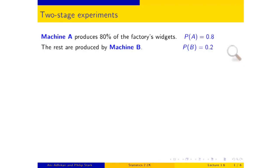That's the first stage — this object is produced by one or the other machine. The second stage is you take a look at it: it's either a good widget or a bad widget. One percent of machine A's widgets are bad. That means if you restrict your attention to the widgets produced by machine A, out of those, one percent are bad.